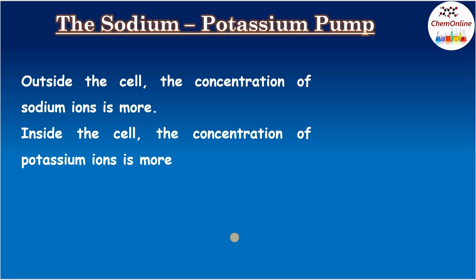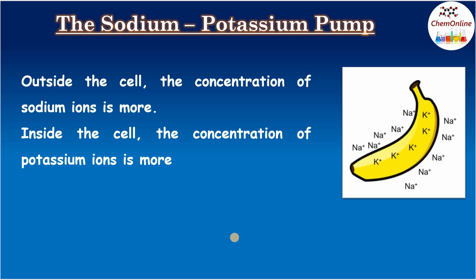To remember the concentration of sodium and potassium ions inside and outside the cell, just think of a salty banana. Bananas are very rich in potassium ions, and if it is salted then the outer side of the banana will be rich in sodium ions. Similar is the case with human or animal cells: outside the cell the concentration of sodium ions is more, whereas inside the cell the concentration of potassium ions is more. This concentration gradient across the cell membrane must be maintained for the efficient functioning of several physiological processes.